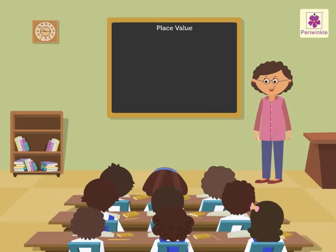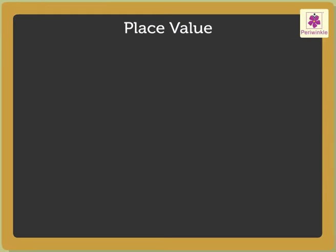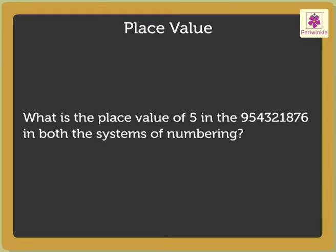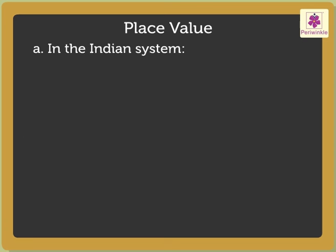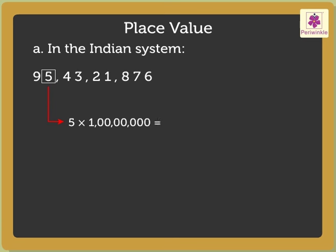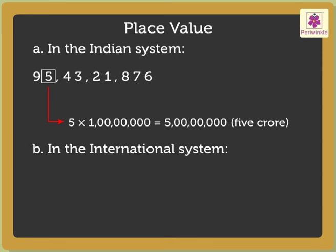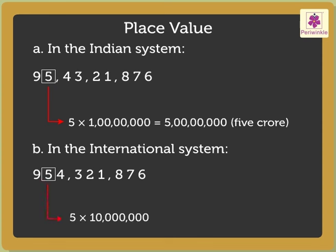Now, let us look at another example. What is the place value of 5 in the number shown in both the systems of numbering? In the Indian system, the place value of 5 is 5 × 1 crore = 5 crore. And in the international system, the place value of 5 is 5 × 10 million = 50 million.